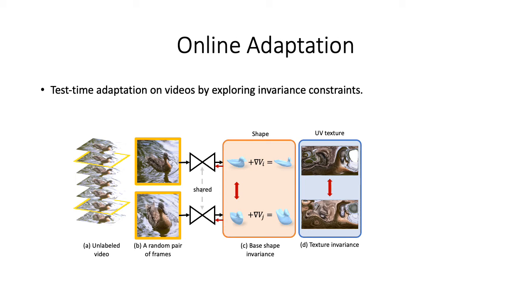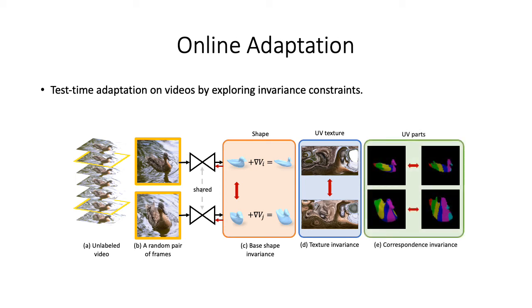For texture-invariance, we enforce the UV texture map to be consistent. Finally, besides shape and texture, we also explore part-invariance in the UV space.